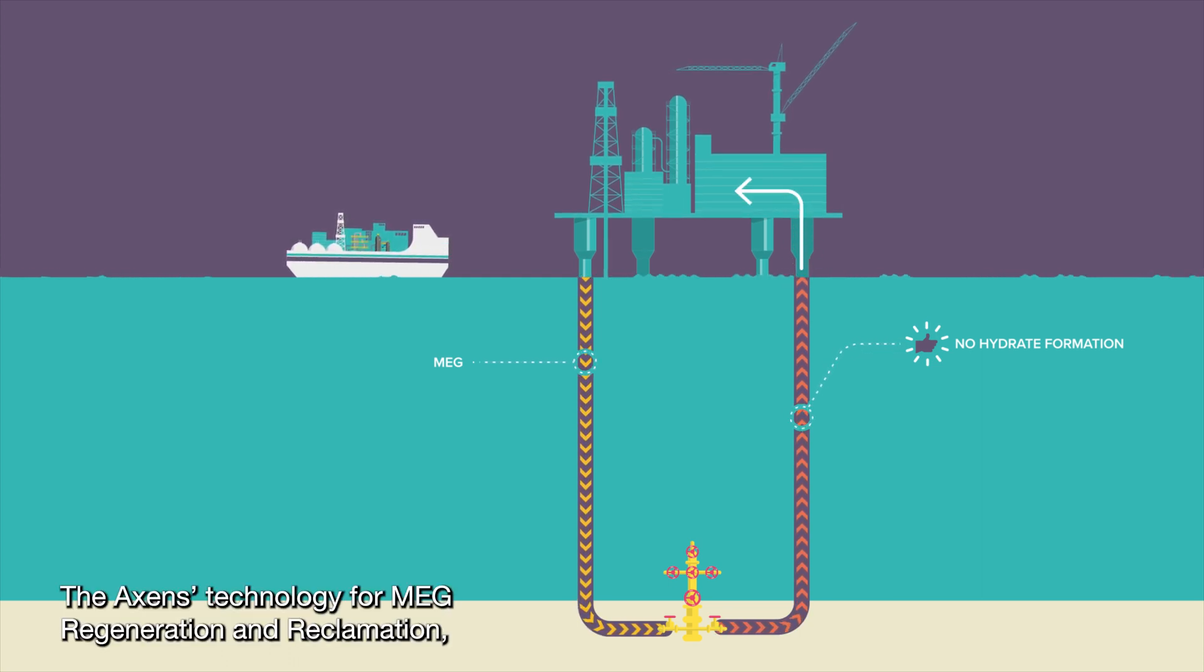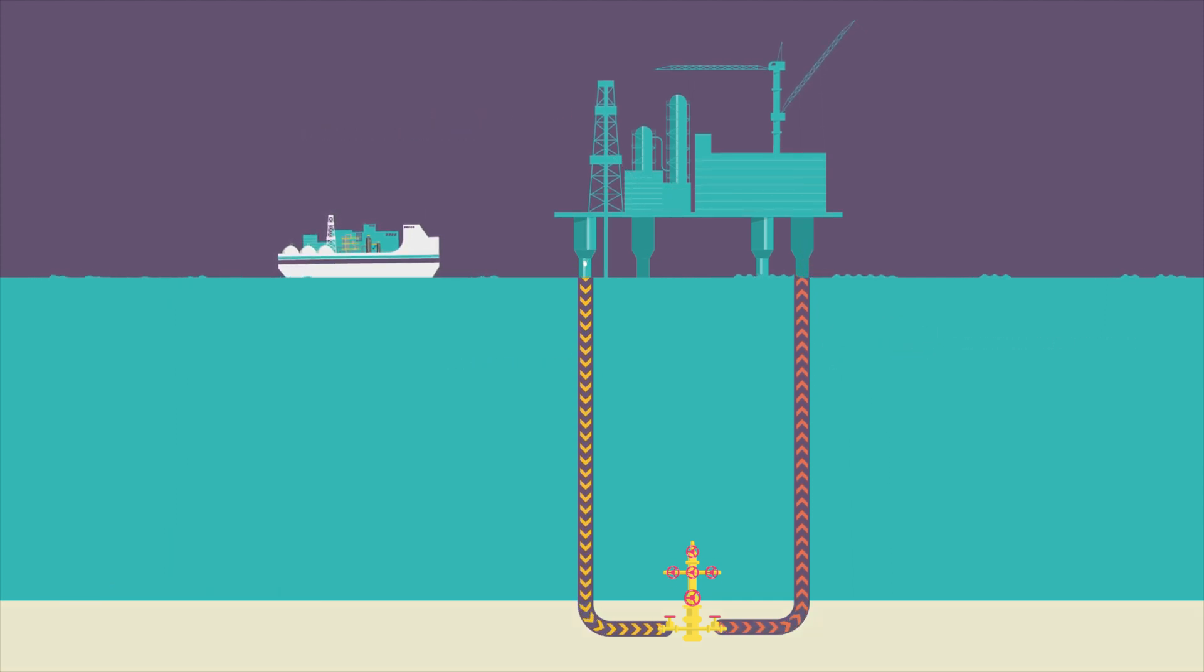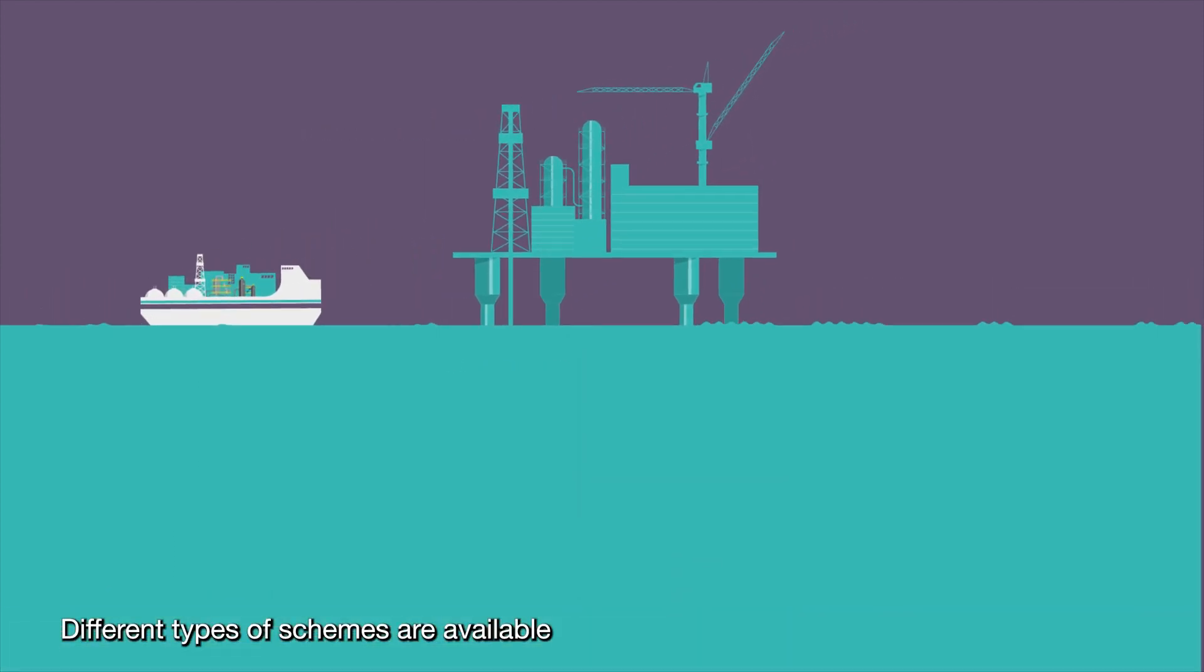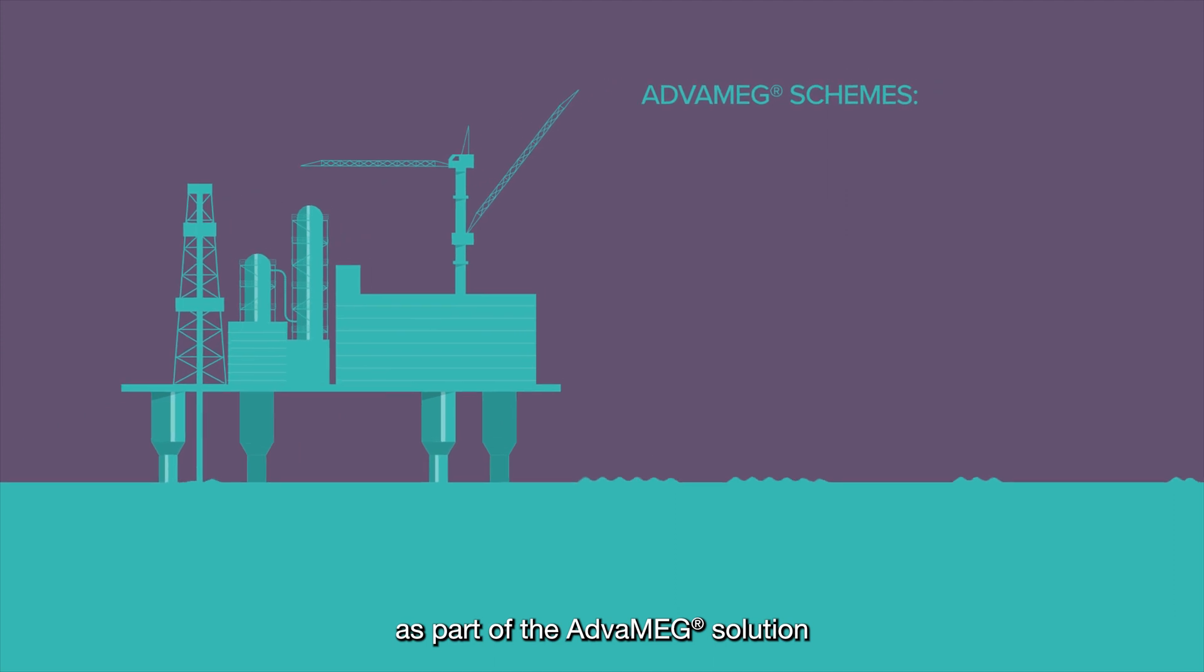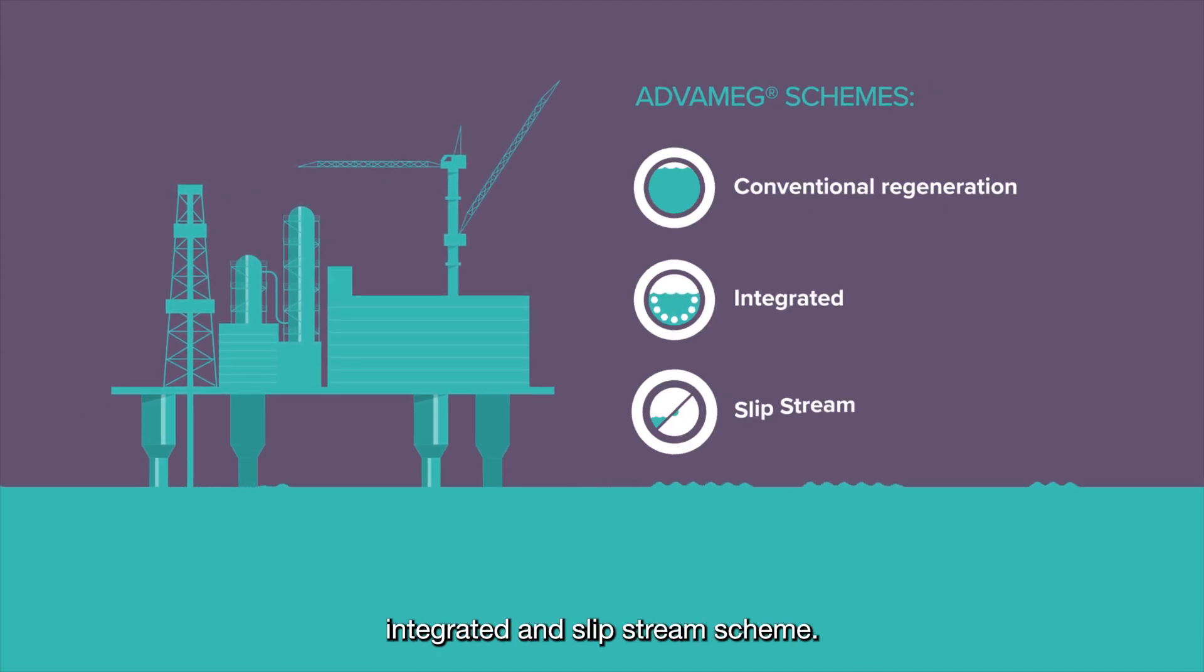The Axens technology for MEG regeneration and reclamation, ADVA-MEG, allows the removal of water and all types of salts dissolved in the rich MEG. Different types of schemes are available as part of the ADVA-MEG solution, such as conventional regeneration, integrated and slipstream scheme.